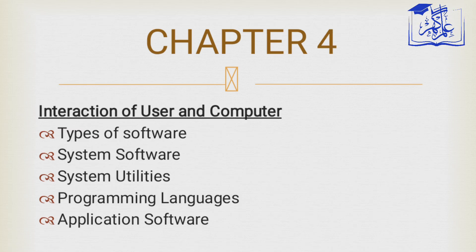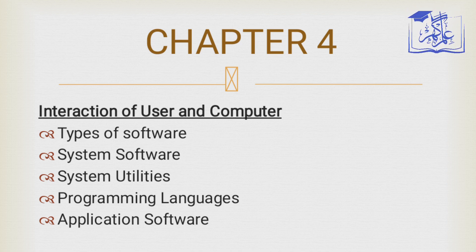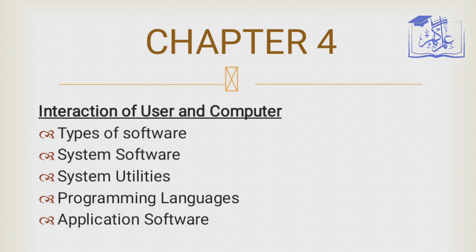In chapter number four, we will cover introduction of users and computers, including types of software: system software, system utilities, programming languages, and application software.